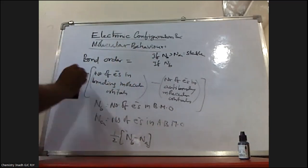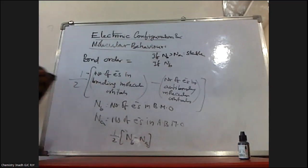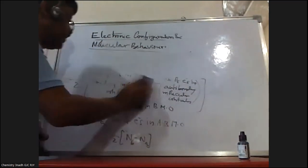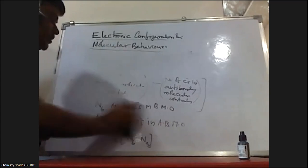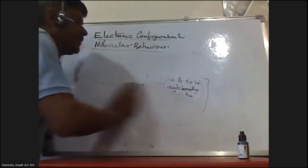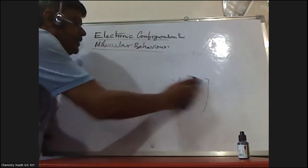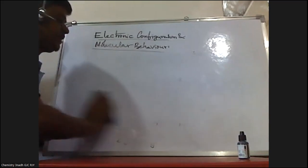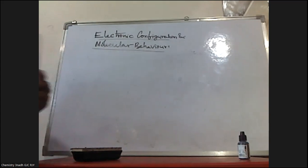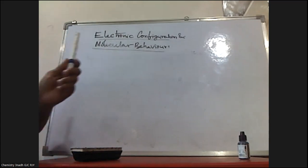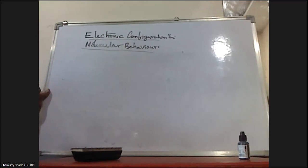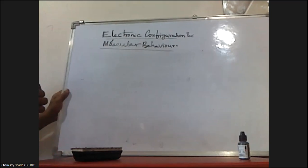This is one piece of information we are getting from the electronic configuration of the molecule. So, one is the bond order — half the difference between the number of electrons present in bonding molecular orbitals minus the number of electrons present in anti-bonding molecular orbitals.